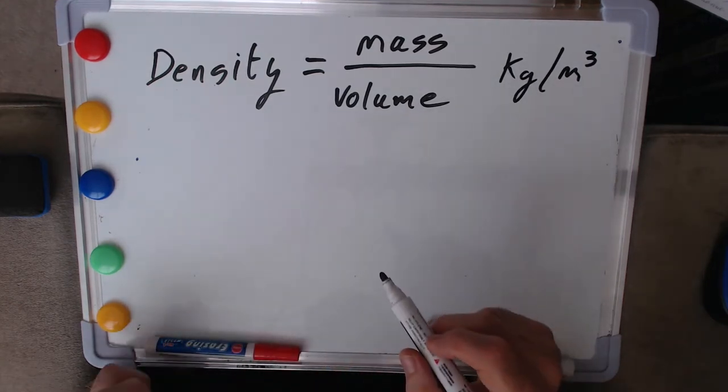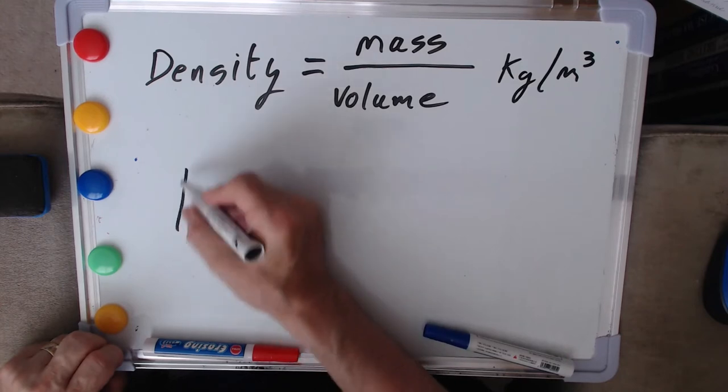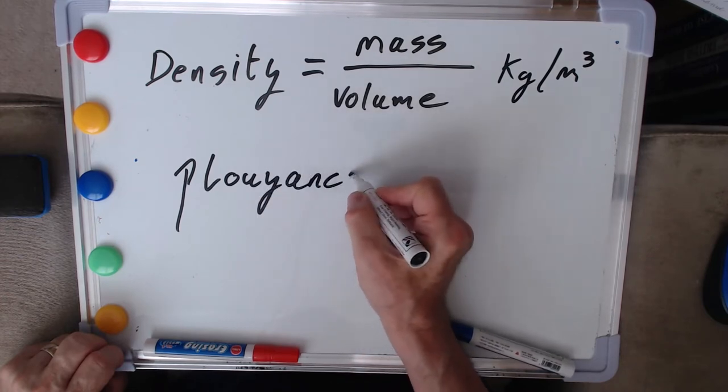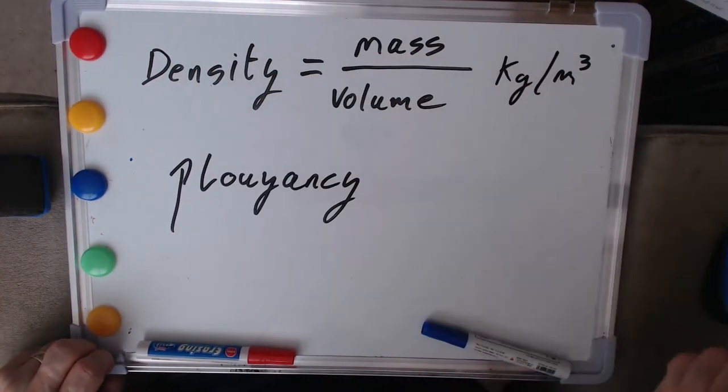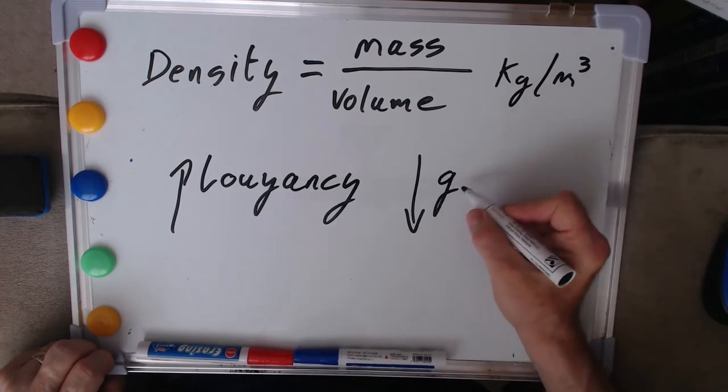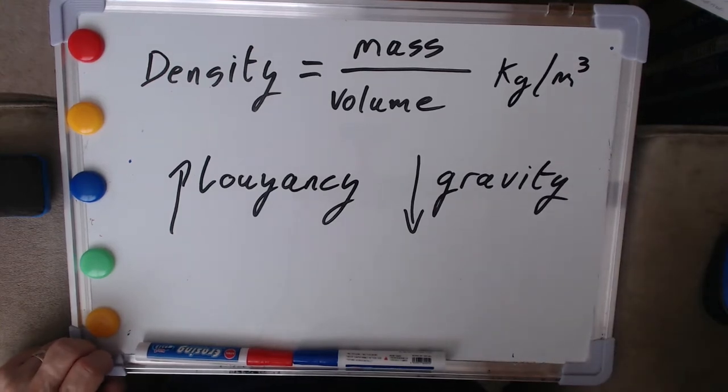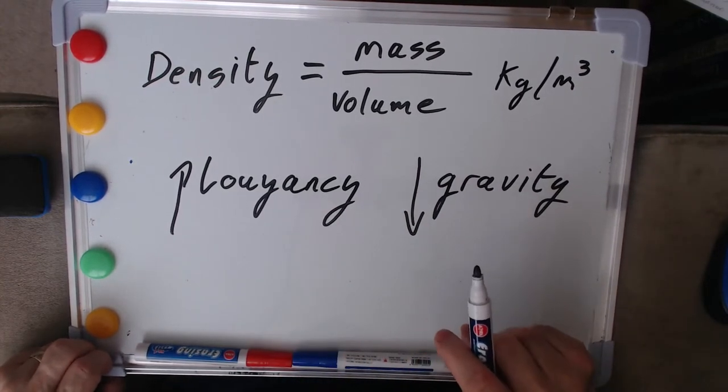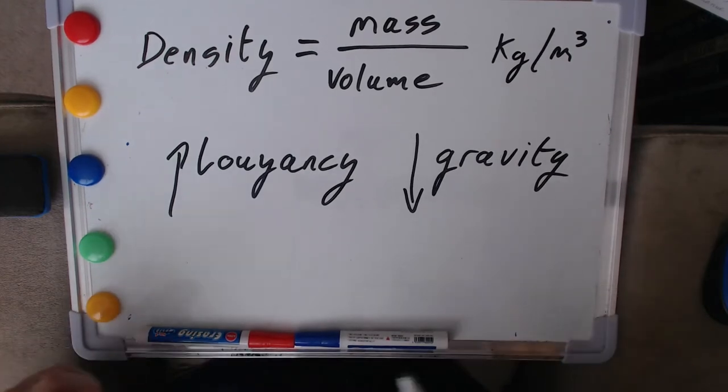Whether an object sinks or floats in water or indeed any other fluid depends on a balance of forces. So we have a force I suppose that we can just label buoyancy, which is tending to push it up and that's associated with this sort of equation here. And of course what's drawing it down into the fluid is simply the action of gravitational attraction, the gravitational force. And it's a balance between these two that determines whether we've got something that sinks or floats. And that's the driving principle behind what we want to look at this morning.